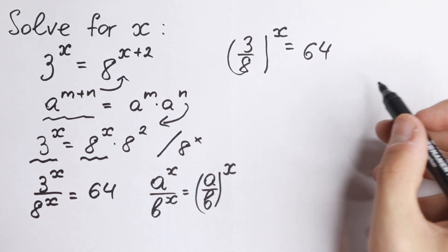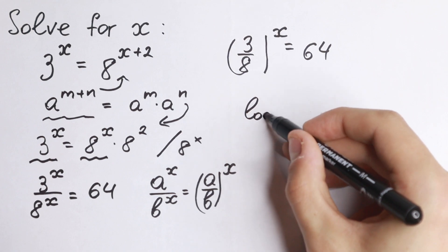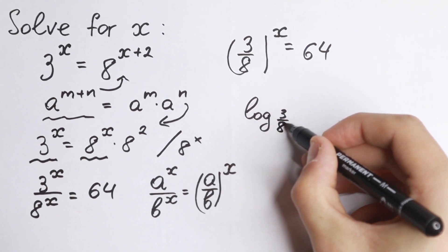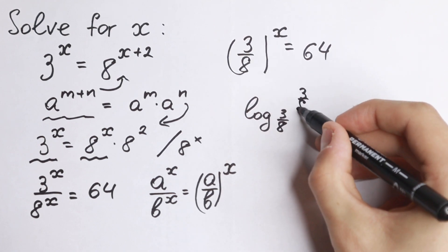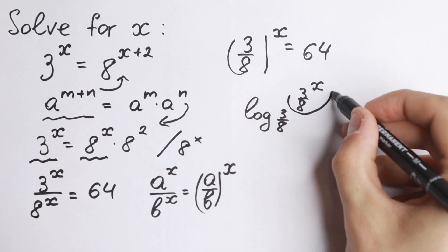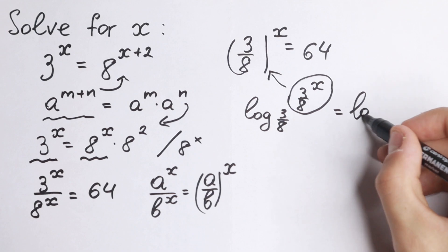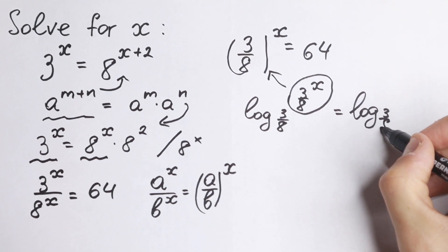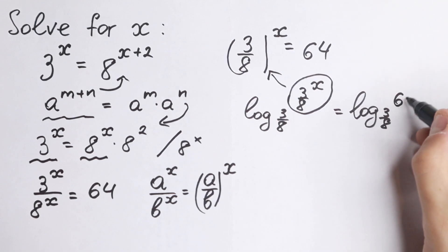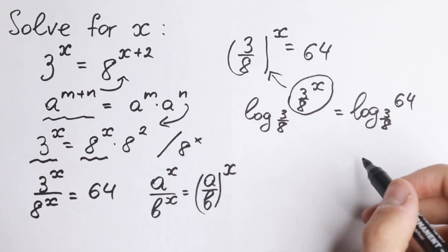Let's take a look from both sides. If we take a look from the left-hand side, base of 3/8 and 3/8 to the power x. So log base 3/8 of (3/8)^x equals log base 3/8 of 64. We're just taking log from both sides.